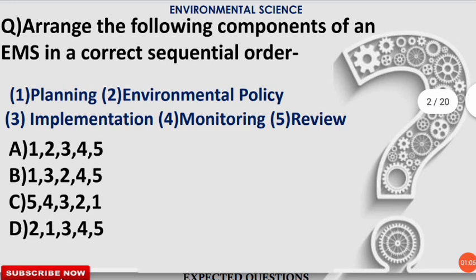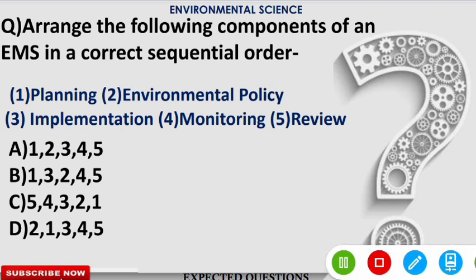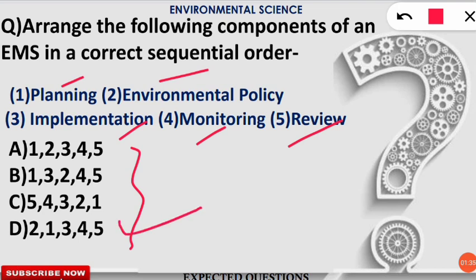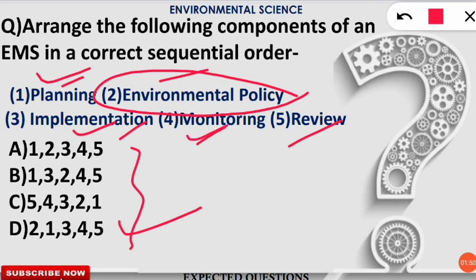The next question is from Environmental Management System: arrange the following components in the correct sequential order. The components given are: (1) Planning, (2) Environmental Policy, (3) Implementation, (4) Monitoring, and (5) Review. The correct option is D. The sequence is: Environmental Policy first, then Planning, then Implementation, then Monitoring, and finally Review of the management system. So the order is 2, 1, 3, 4, 5.